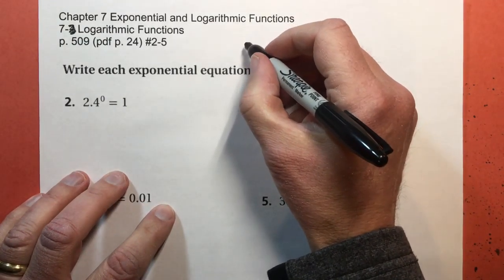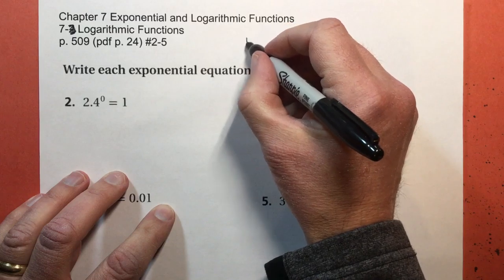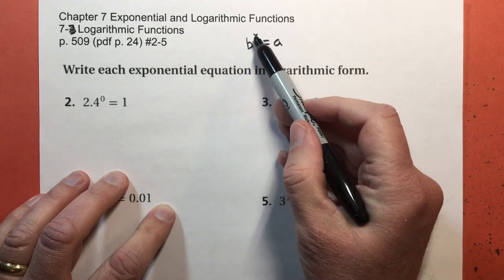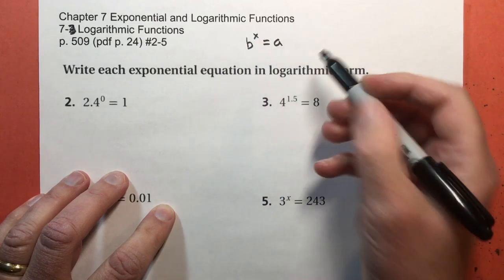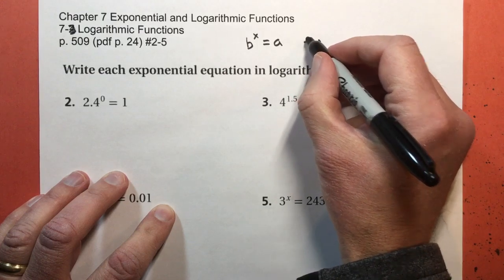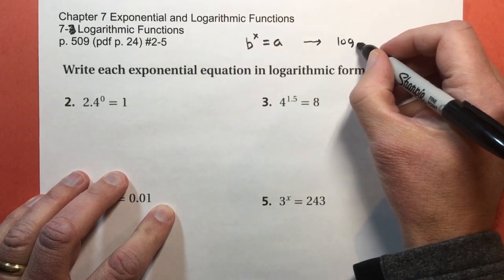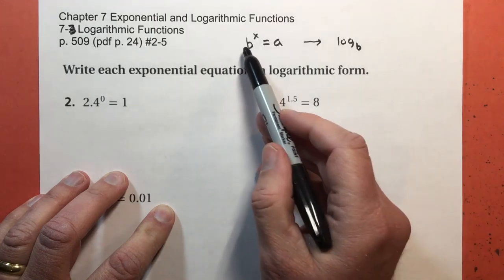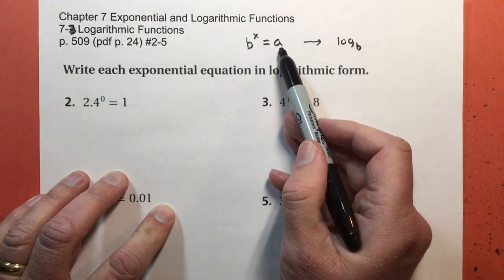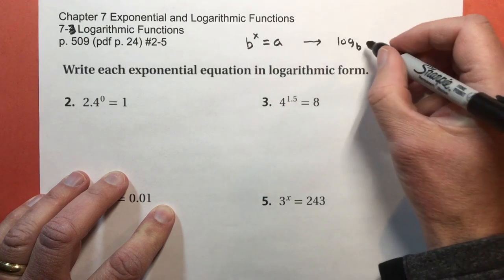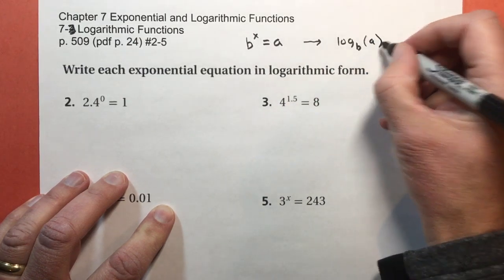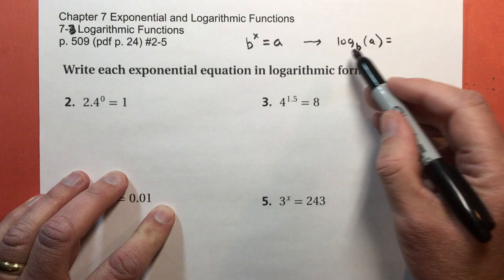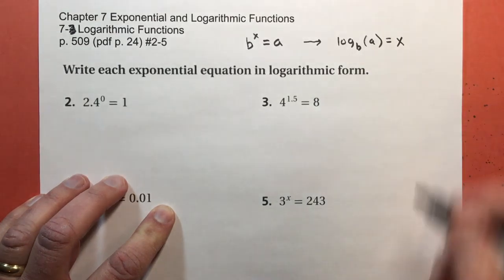Here's how it worked. If I have b to the power of x equals some number, like five to the third power equals 125, then to change that into log form I write log with a subscript of the base. Whatever the base, that exponent is the base of my logarithm. What this exponent equals is going to be the input of my logarithm. The logarithm is the exponent.